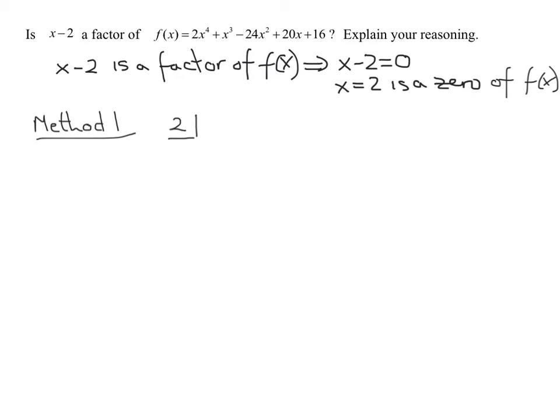And then all I have to do is strip off my coefficients. Are all my terms present? I have x to the fourth, x cubed, x squared, x and a constant. There's nobody missing. I don't have to put any zeros for missing terms. So what are my coefficients? 2, 1, negative 24, 20 and 16.